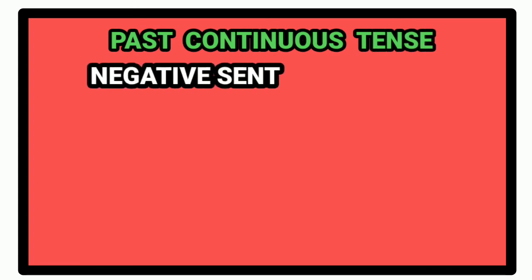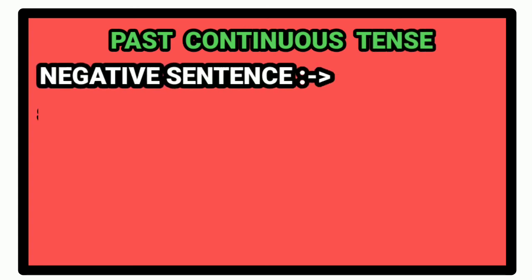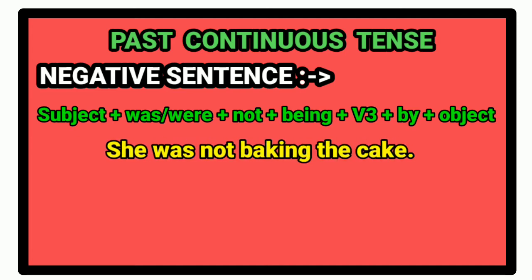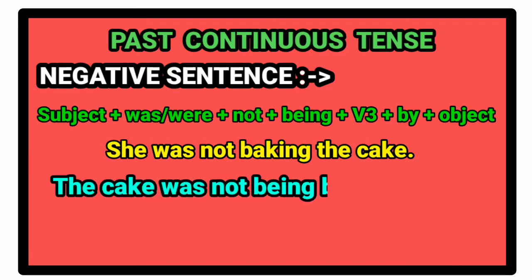Now, past continuous tense. For negative sentences, we follow the following rule. First of all, we write subject. Auxiliary verb was or were. Then we write not. Then we write being. After that, past participle form of the verb. After that, preposition by. And in the last, we write the object. For example, she was not baking the cake. Passive voice of the sentence would be: the cake was not being baked by her.